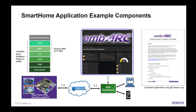Let's take a quick look at the components of this application. On the left-hand side, we have the ARC EM Starter Kit development platform running our smart home application. The application uses the Embark Open Software Platform, or OSP, which uses the Amazon AWS IoT C SDK, including TLS Secure Communications and MQTT Messaging to communicate with IoT objects, referred to as things, on the Amazon AWS IoT cloud service.